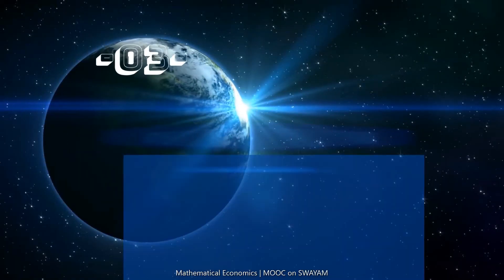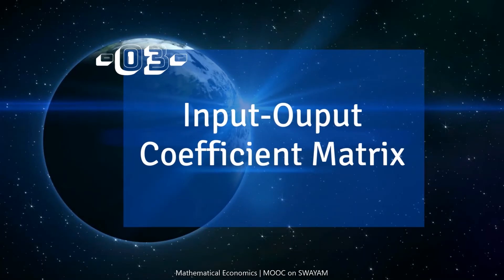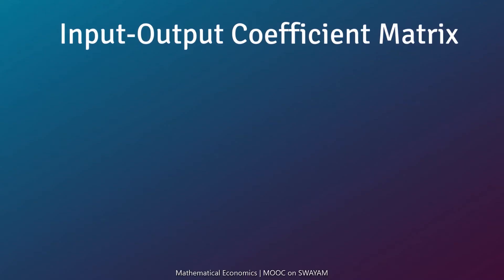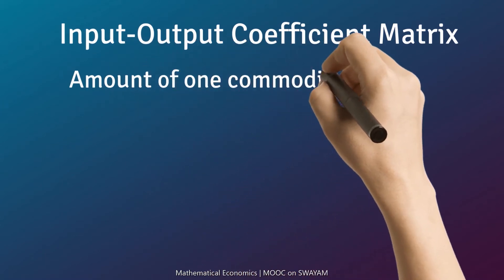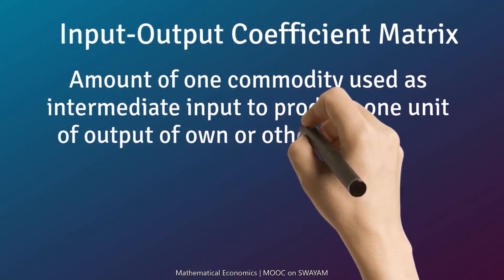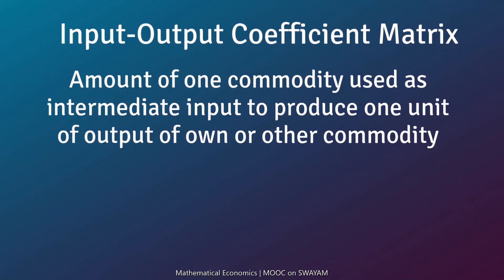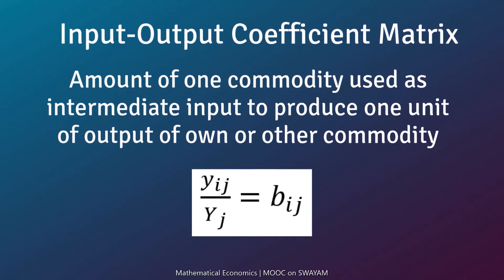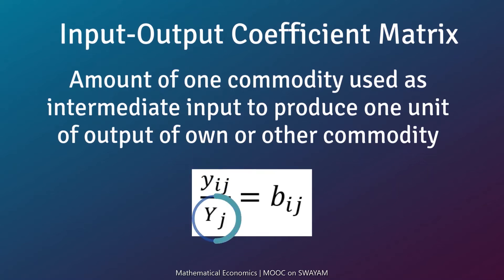The input-output coefficient matrix is the matrix of input-output coefficients. This coefficient expresses the amount of one commodity used as intermediate input to produce one unit of output of the same or another commodity. This is the mathematical expression used to calculate the input-output coefficient. Yij is the total output of the i-th commodity used as input in the j-th commodity, and yj is the total output of the j-th industry.